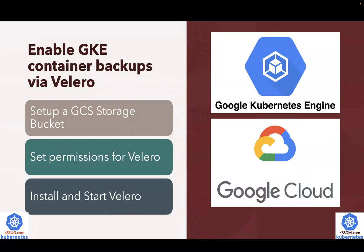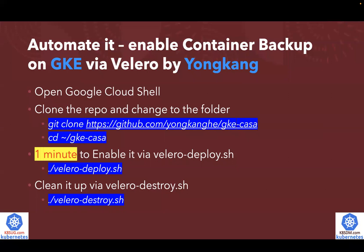Once you have the environment — the prerequisites — ready, it's really just three simple steps to enable GKE container backups with Velero. Number one, you need to set up a GCS storage bucket. Secondly, you need to give the right permissions for Velero to use. And last but not least, you can go ahead to install and start Velero. I automated the whole process — even those three steps can be challenging for people not familiar with Google Cloud. Literally, you just run one command: it's called velero-deploy.sh.